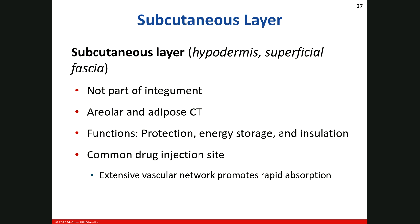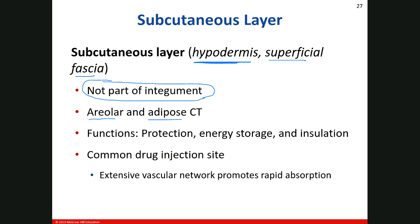The last tissue layer we're going to talk about — make sure you star and circle this — it is NOT a part of the integument. That's a great true-false question. That's the subcutaneous layer, also called the hypodermis or superficial fascia. It is not part of the integument, and it's made up primarily of loose connective tissue proper — specifically areolar and adipose. Adipose is for energy storage. If you know the functions of adipose, then you know the functions of the subcutaneous layer, because it predominantly has adipose tissue in it.